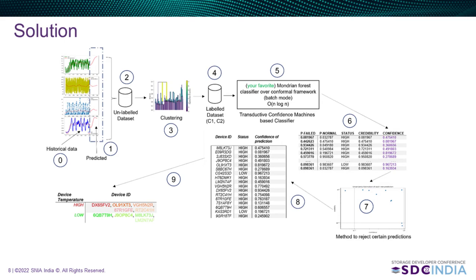With all of this data, what we do is generate an N-step ahead prediction for all of these factors, and based on that generate time series data. Once we have the time series data, which is unlabeled, what we try to do is use HDB scan to cluster the entire dataset into two clusters, C1 and C2.